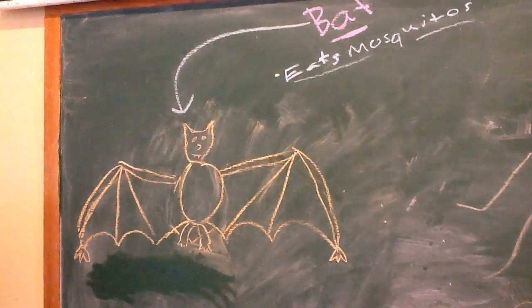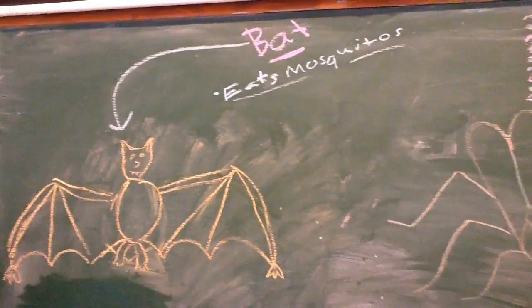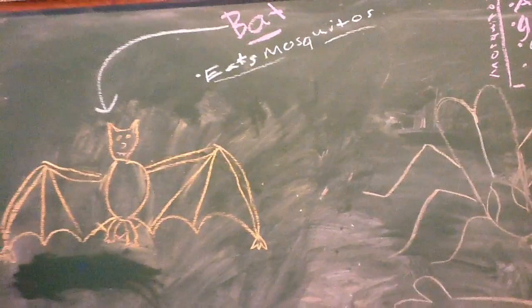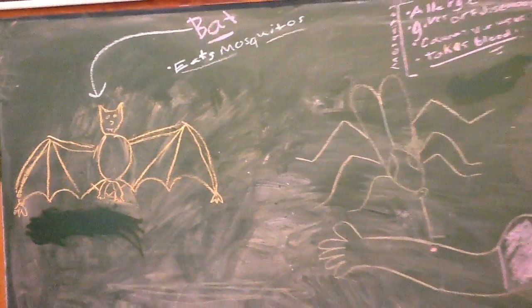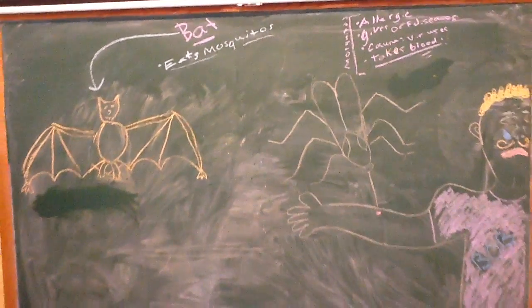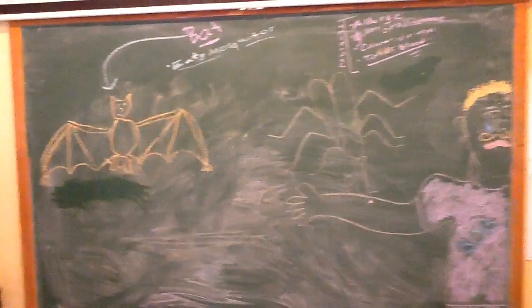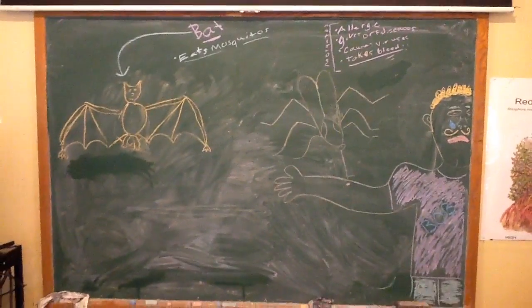Luckily, we have a mutualistic relationship with the bats on the island. The bats eat the mosquitoes, which is one of their main sources of food, and this helps us and the land mammals because it limits the mosquitoes that will bite us.